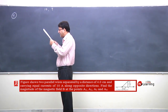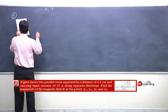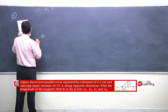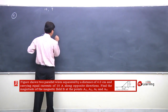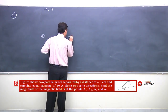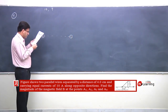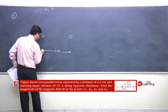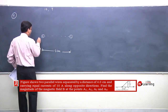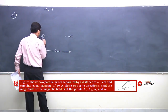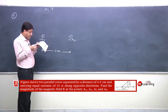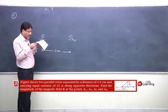Let me explain the situation: one wire has current going outward (toward us) and the other wire has current going inward (away from us). The separation between the two wires is 4 centimeters. Both wires carry equal current of 10 Ampere but in opposite directions.